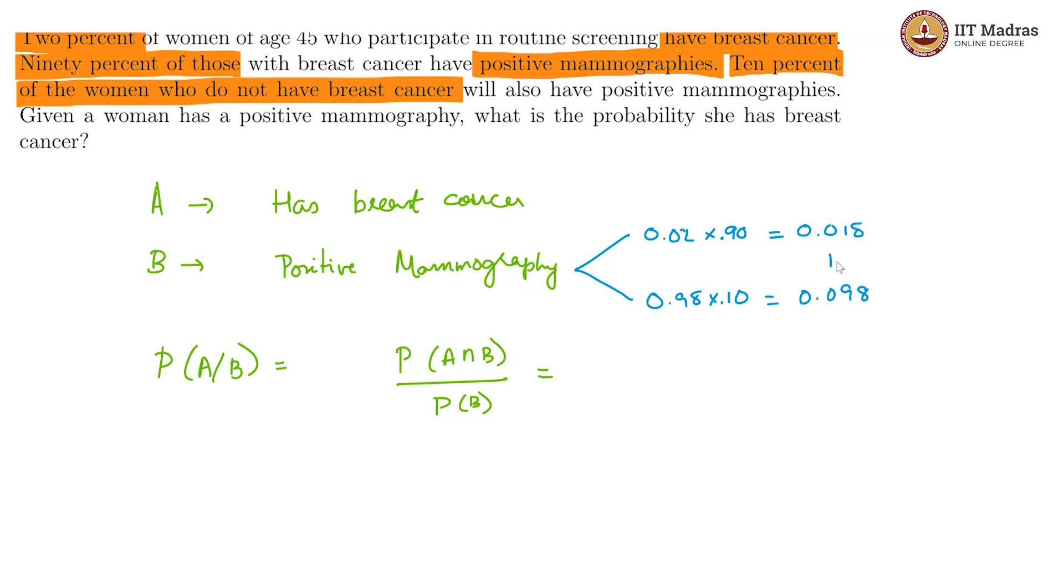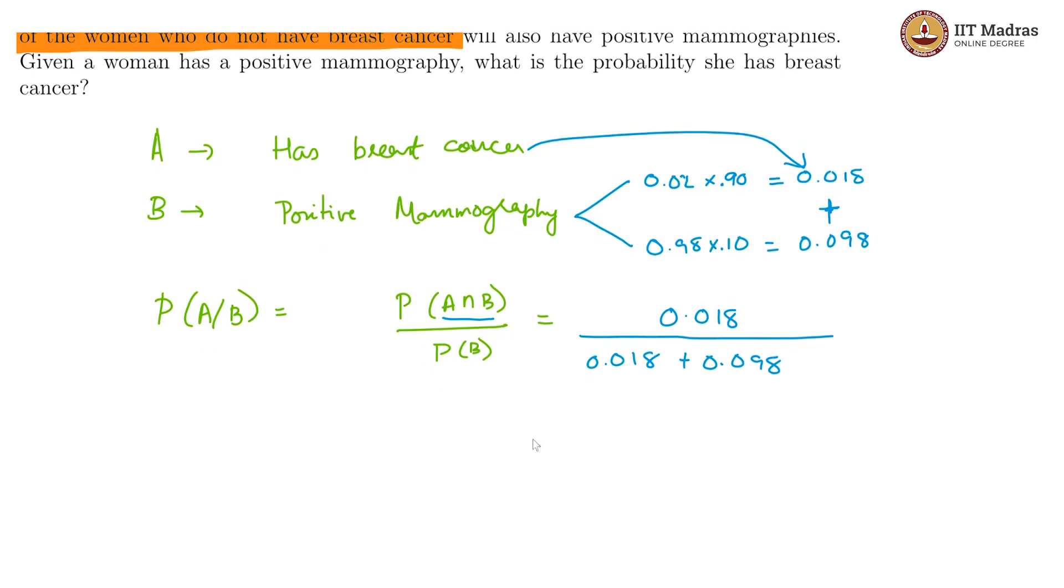This is the total probability of a mammography showing positive, which is P of B: 0.018 plus 0.098, equals 0.116. The A intersection B case, having breast cancer and a positive mammography, is 0.018. So this equals 0.018 divided by 0.116, which is roughly equal to 0.1552.